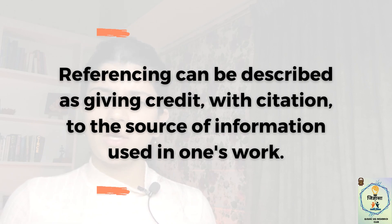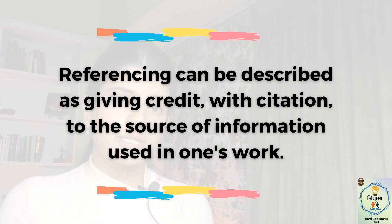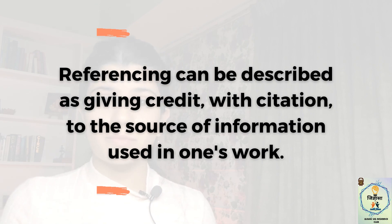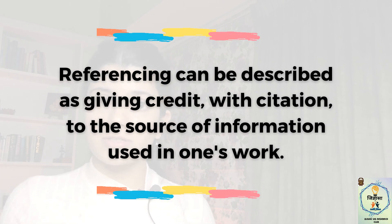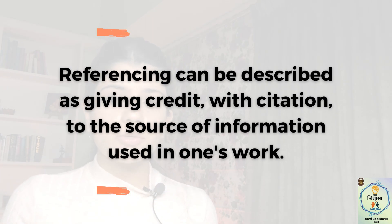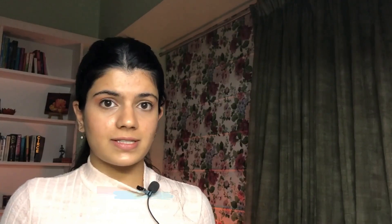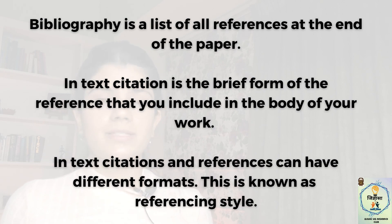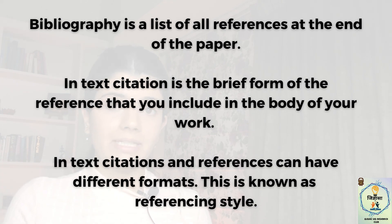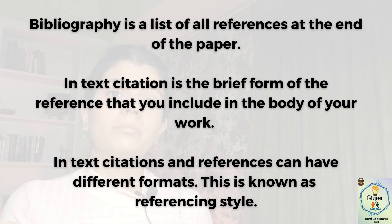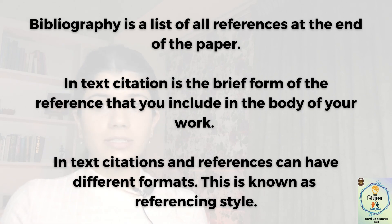Let's get some terms clear. Referencing is the process in which you attribute certain ideas, statements, or work like research findings to other authors, indicating the source. Bibliography, also known as a reference list, comes towards the end of your paper — it's a list of all the references made in the body of your paper. In-text citations are letters or numbers used to indicate a particular reference, which will lead the reader to your reference list.